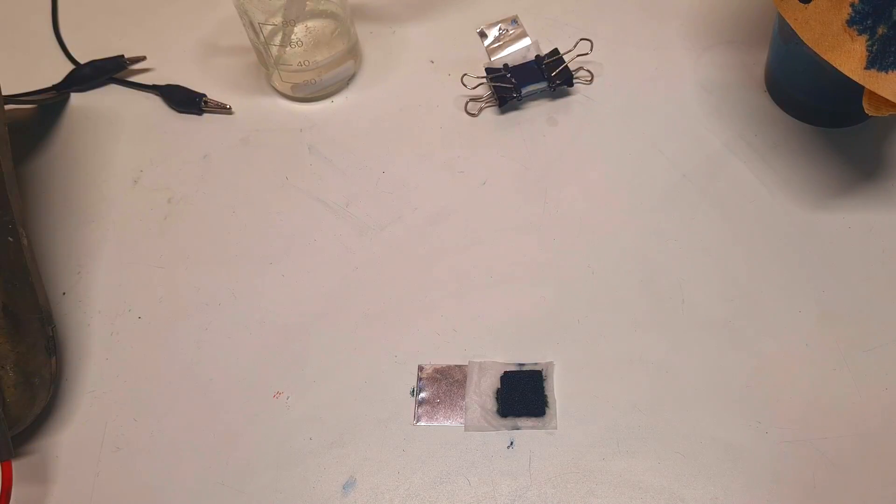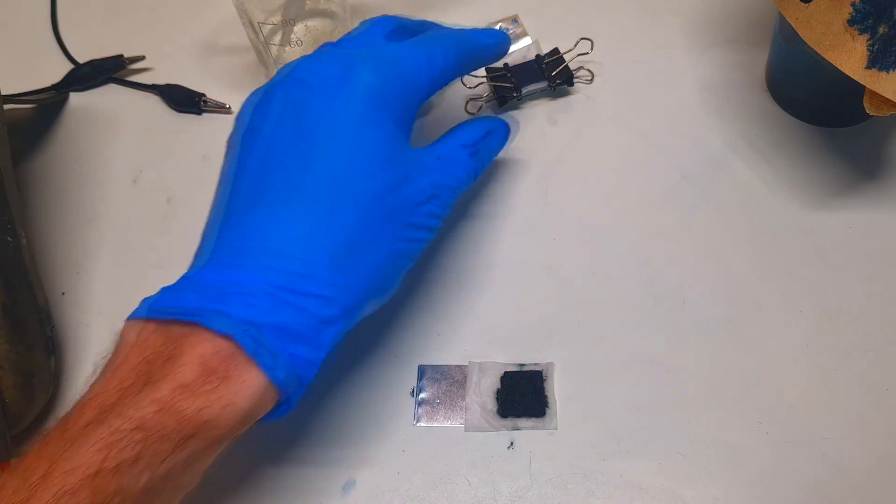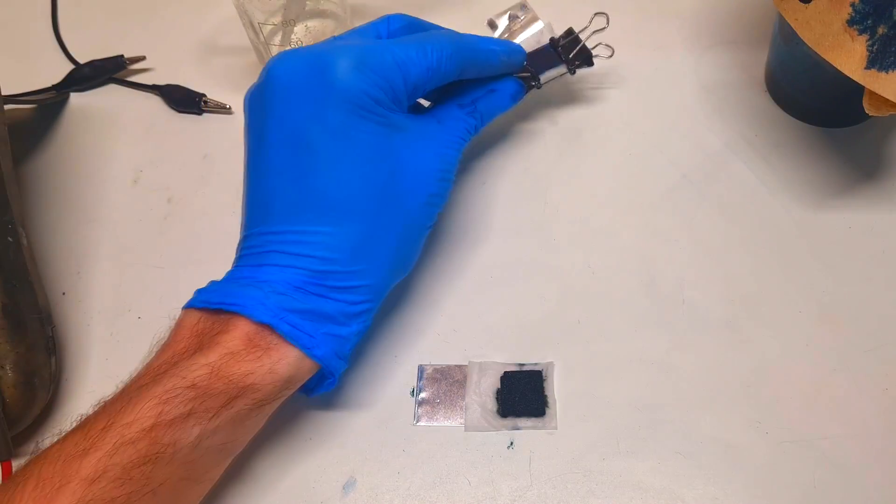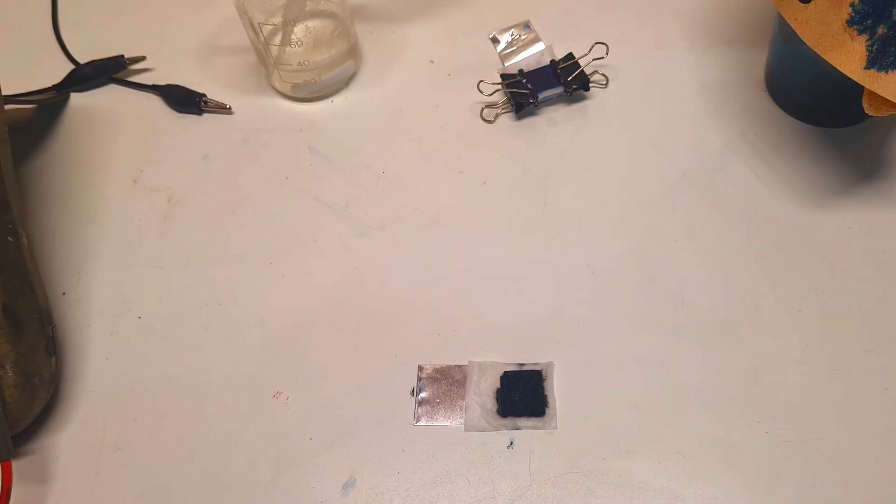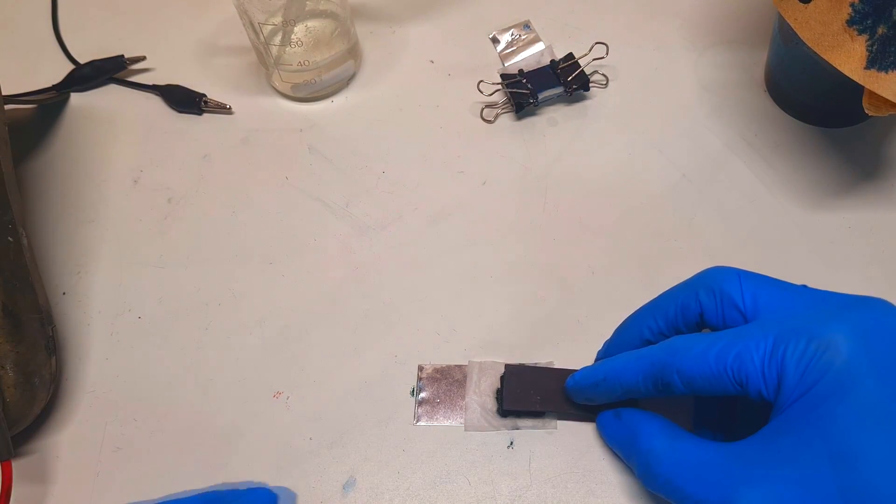And now the positive current collector, instead of indium tin oxide glass, I will use some graphite plate, which will also work really great.